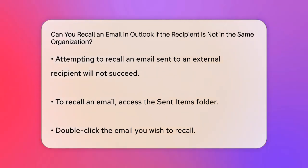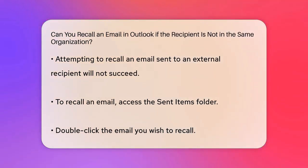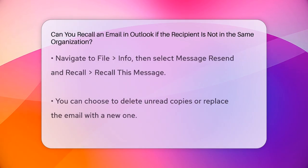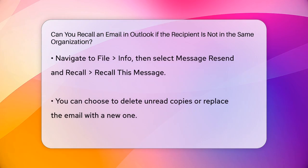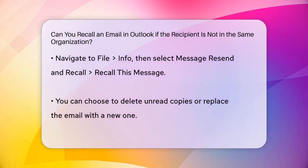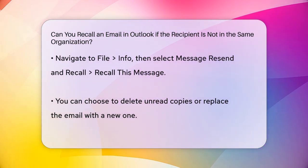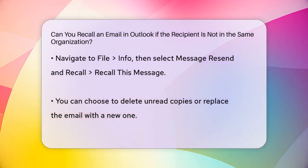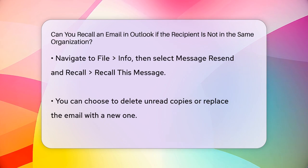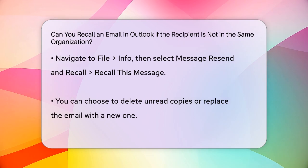If all conditions are met, you would open your Sent Items folder, double-click on the email you want to recall, go to File, Info, and then select Message Resend and Recall, then Recall This Message. You can choose to either delete unread copies of the message or replace them with a new one.